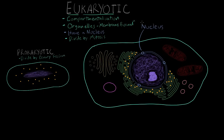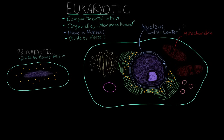Let's go through some of the other important organelles within eukaryotic cells. First, let's go back to the nucleus. I think of the nucleus as the control center of the cell, because that's where all of the DNA is and where DNA is transcribed into mRNA. Probably the next most important organelle are called mitochondria. Mitochondria you can think of as the cell's power plant, because mitochondria is the site of cellular respiration, where glucose is converted into ATP to provide energy for everywhere else in the cell.